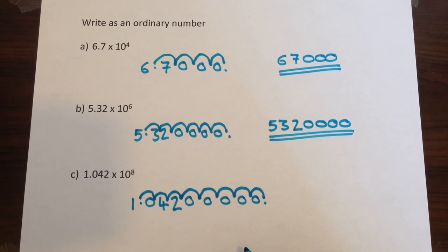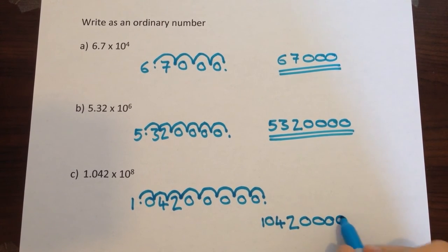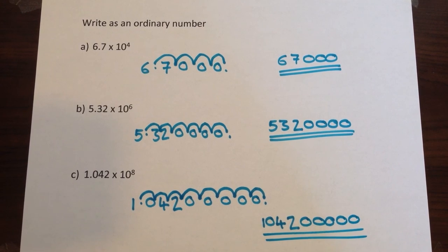And then remember to rewrite your number correctly without two decimal points. So 1, 0, 4, 2, and five zeros: 104,200,000. And that would be the final answer.